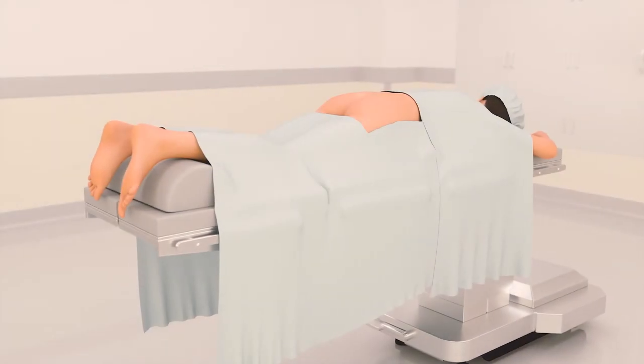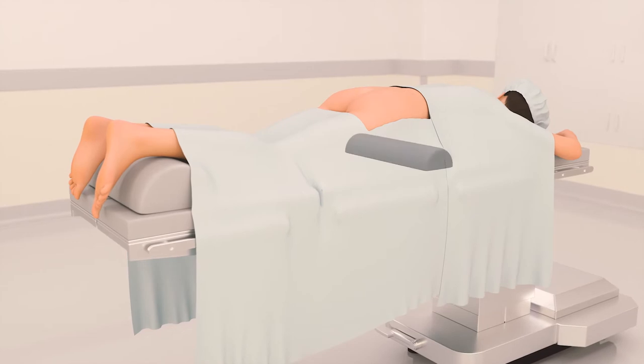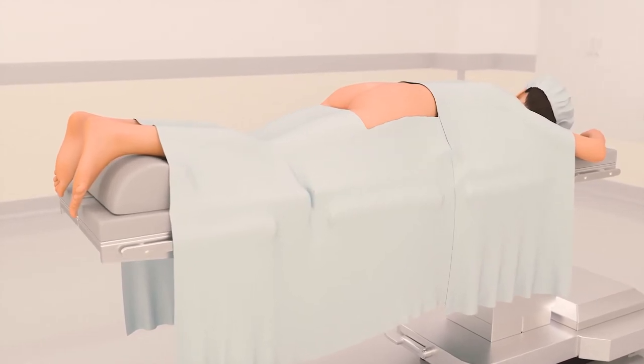The patient should be lying prone with elevation under the hips to allow for a flattening of the sacrum. There should not be any rotation or tilting of the sacral area for ease of needle placement.